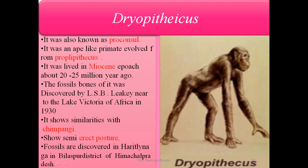In the ape stage, the first one is Dryopithecus, also known as Proconsul. It is an ape-like primate that evolved from Propliopithecus and lived in the Miocene epoch, around 20 to 25 million years ago. The fossil bone was discovered by L.S.B. Leakey near Lake Victoria in Africa in 1930. It shows similarities with chimpanzees and a semi-erect posture. Fossils were also discovered at Haritalyangar in Bilaspur district of Himachal Pradesh.